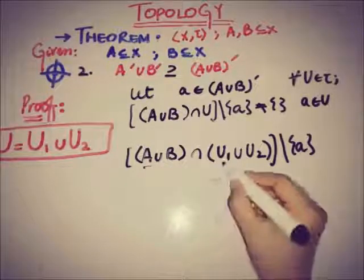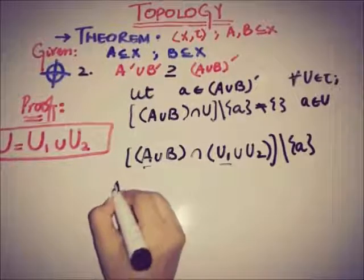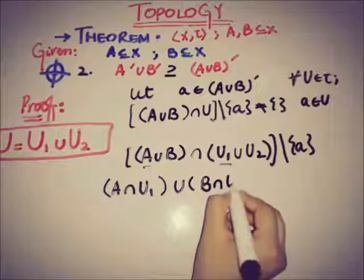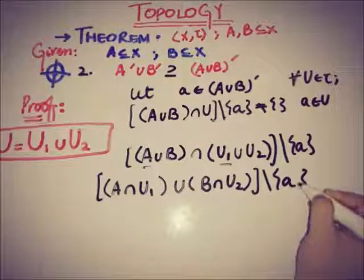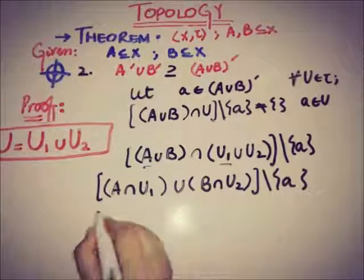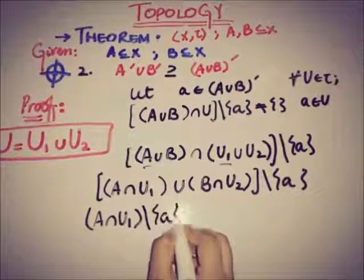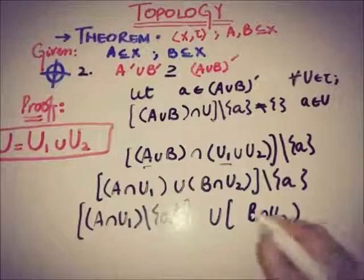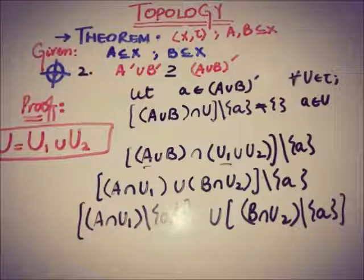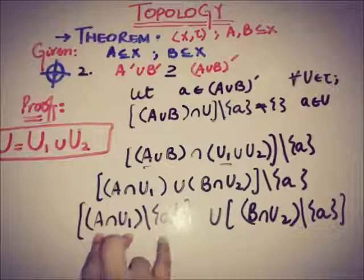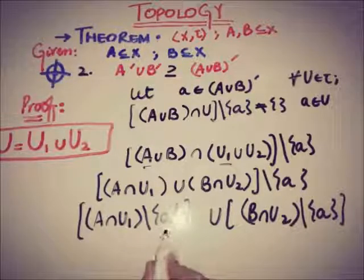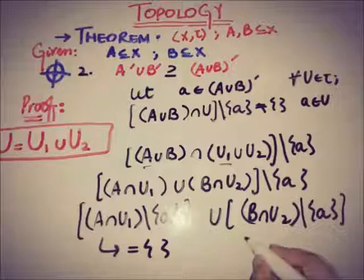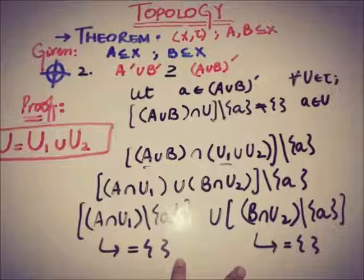So a has open set U₁ and b has open set U₂. We can write this as [(A∩U₁)\{a}] ∪ [(B∩U₂)\{a}]. Since U₁ is a set where (U₁∩A)\{a} = ∅ and similarly (U₂∩B)\{a} = ∅, both terms equal the empty set, so their union is also the empty set.